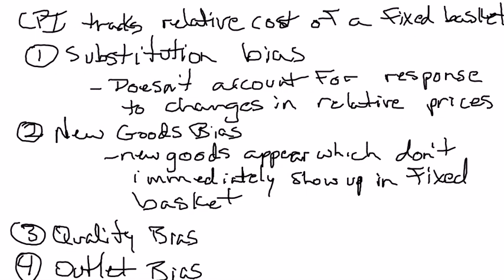The government has taken steps over the years to reduce these biases, but depending on which economist you talk to, it still looks like these biases lead to an overestimate of the cost of living on the order of about half a percent a year, or maybe even one percent a year. So if the Consumer Price Index goes up by 2.1 percent in 2012, the actual cost of living probably went up by something less than that — maybe as little as 1.1 percent, or as much as 1.6 percent. The magnitudes of these biases are a little uncertain, but we do know that the Consumer Price Index overstates the cost of living for these four reasons.